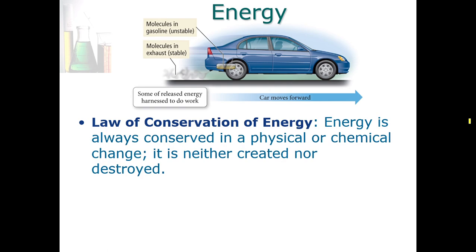For example, when we drive a car, we start with a fuel, gasoline, that has molecules in a high potential energy state—they're unstable. As we pump the gasoline into the engine and we spark and we burn the gasoline, that energy is now converted into the work that causes the car to move forward.